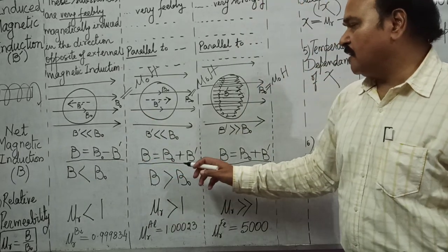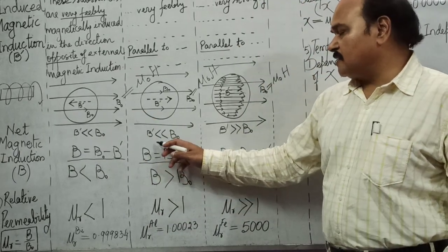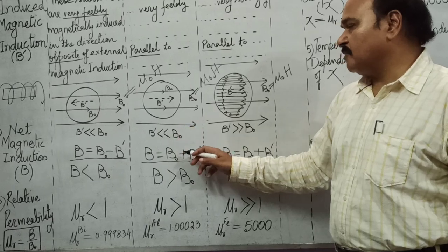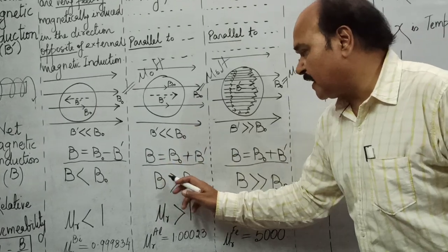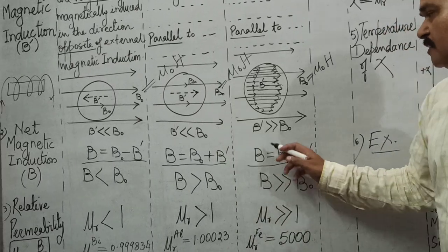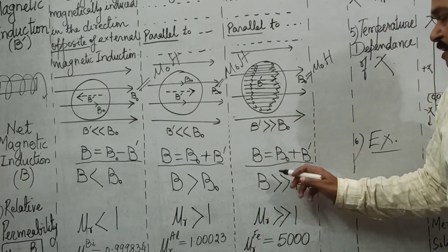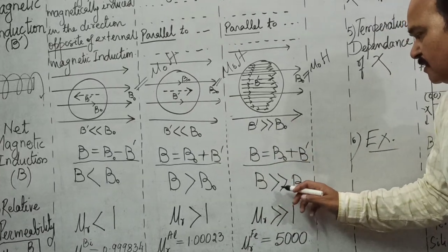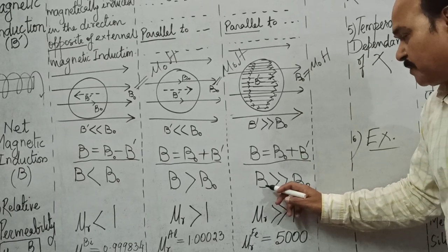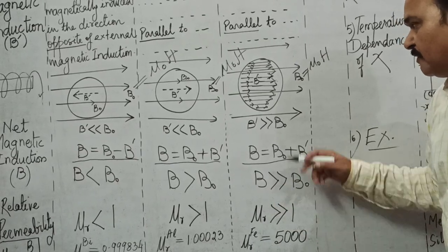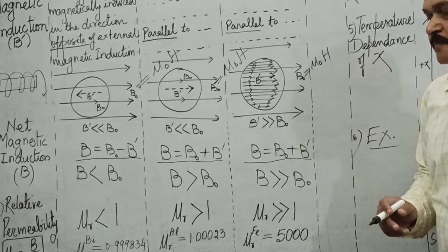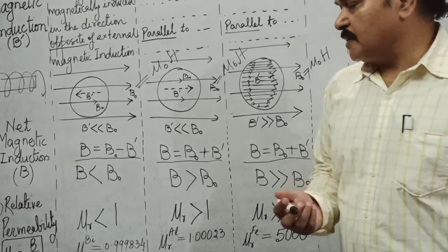For diamagnetic substances, B' is much smaller than B0, so the net field B is very slightly less than B0. For paramagnetic substances, B' is also much smaller than B0, so B is very slightly more than B0. For ferromagnetic substances, B' is much greater than B0, so the net field is much greater than the field in free space.